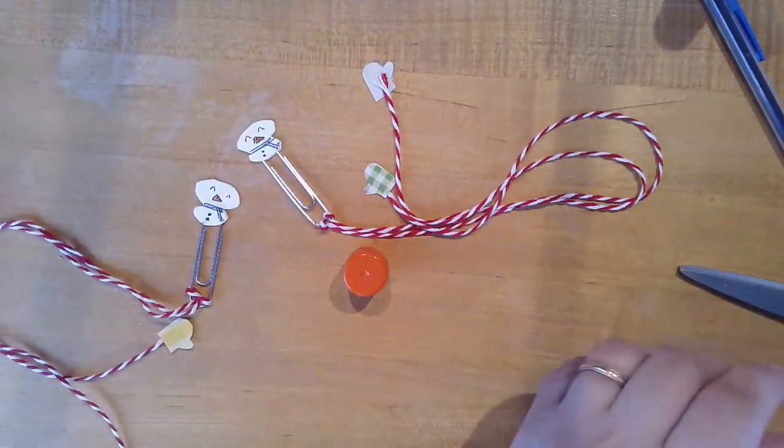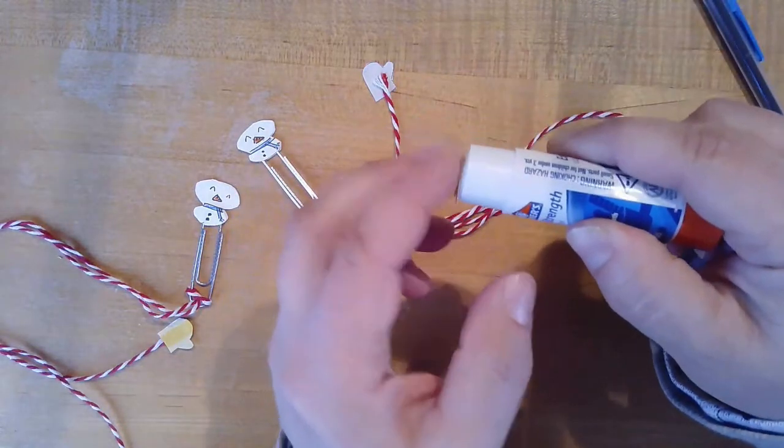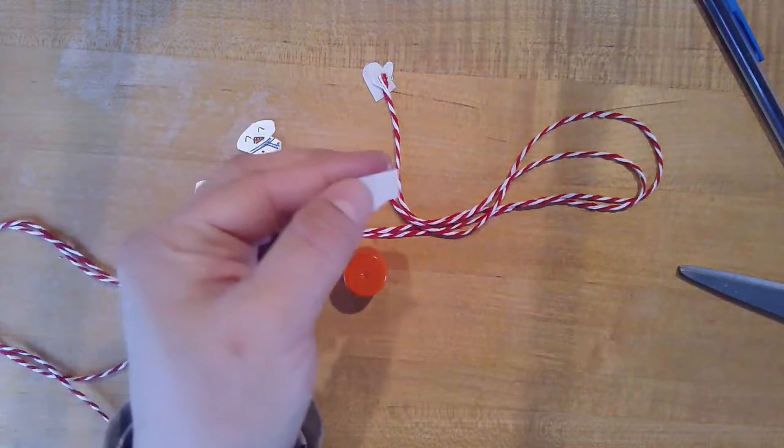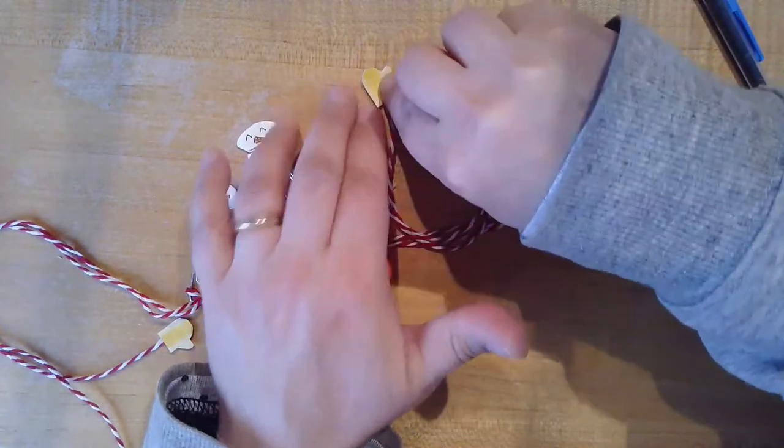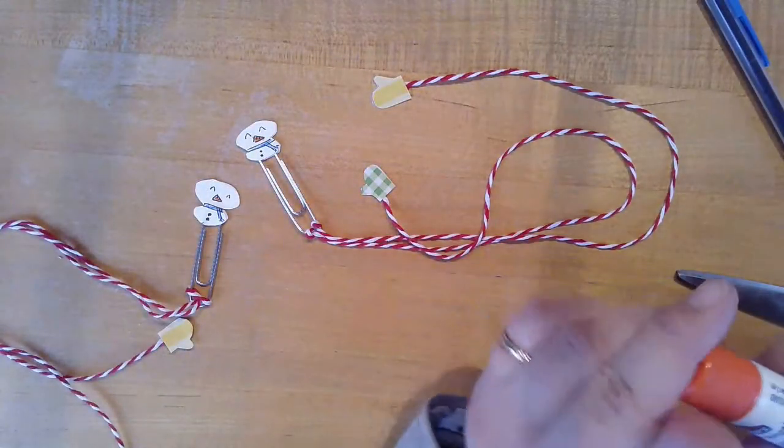And the last thing that you're going to want to do is just make sure that your glue stick, your glued pieces are completely dry before you use it as a bookmark, because you don't want any wet glue sticking to your books. So let it dry.